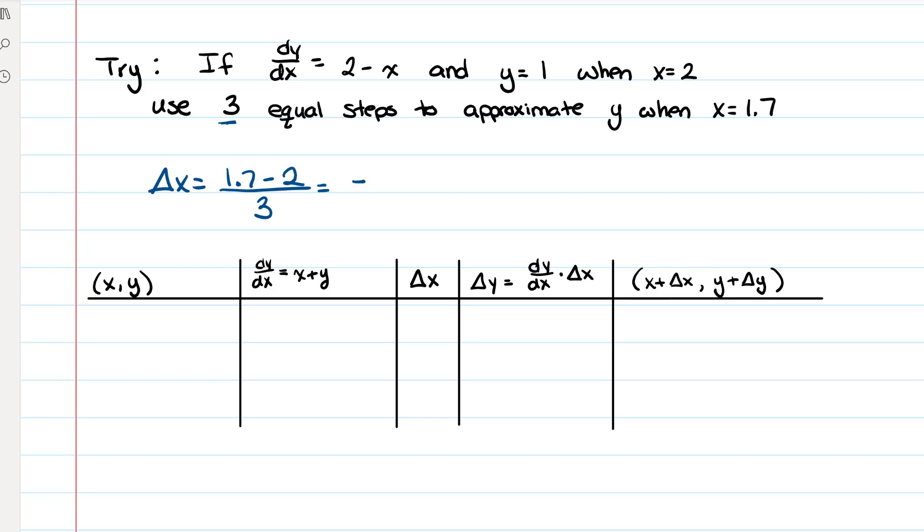So we get negative 0.3 divided by 3. So our delta x is negative 0.1. Okay, and we're going to start with the point (2, 1), which comes from right here.